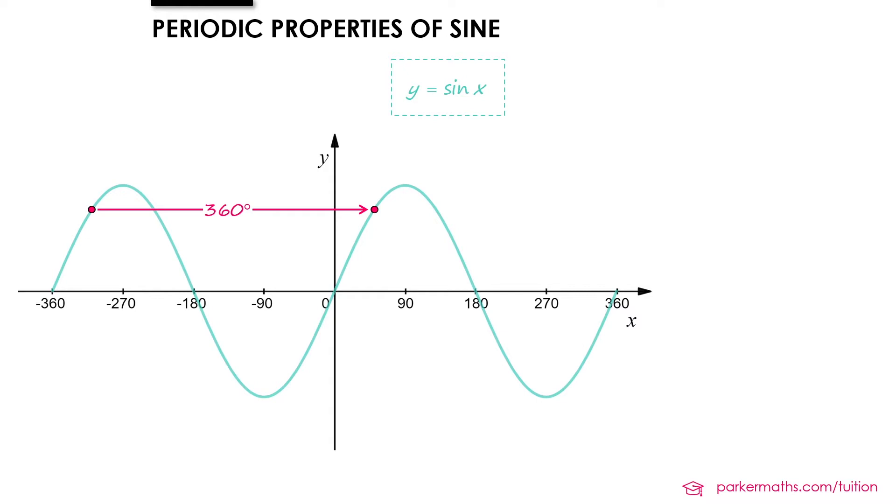And so we can state the periodic property of sine to be as follows. Sine theta equals sine theta plus or minus 360 degrees.